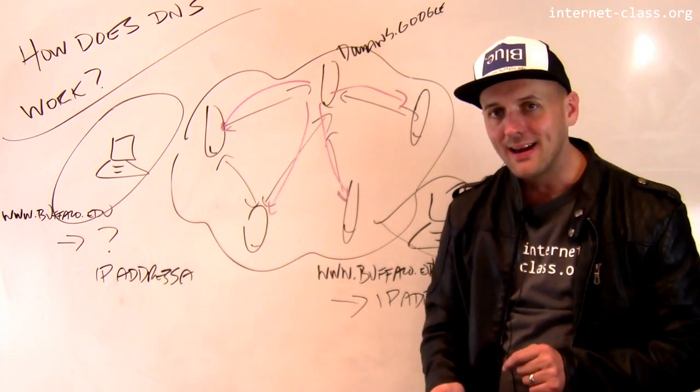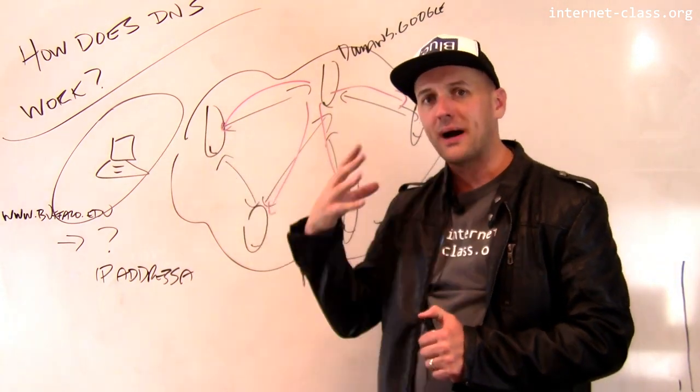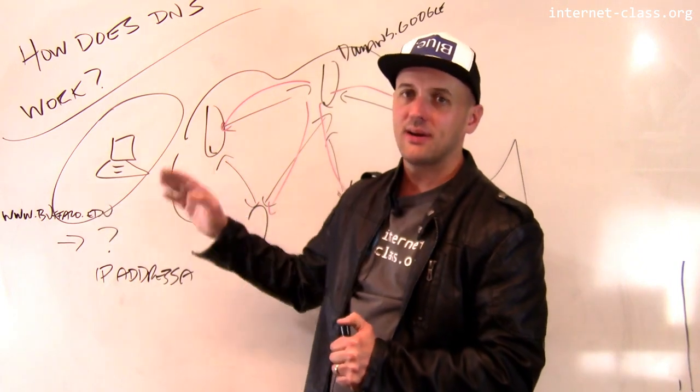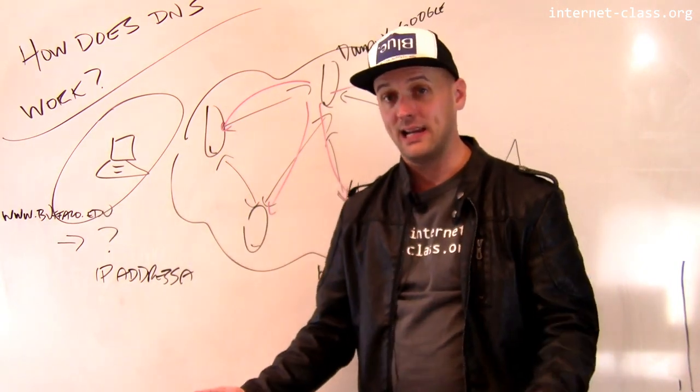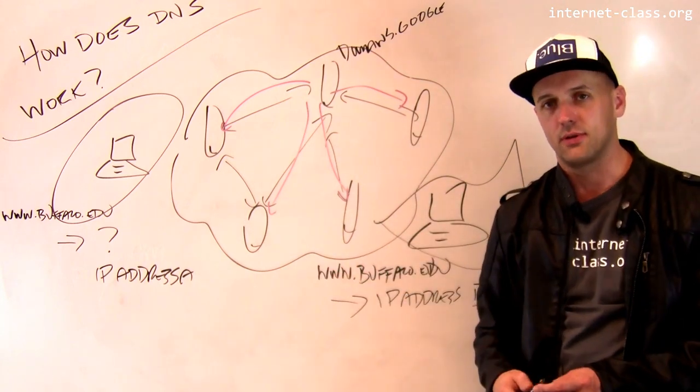This is not a bug. This is actually a feature because it allows us to respond to where the request is coming from. So when the DNS request comes from Asia, I try to resolve it to a server located in Asia. If the DNS request comes from the States, I might try to resolve it to a server located in the States.